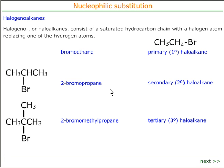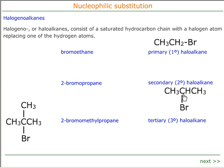A secondary haloalkane has two alkyl groups attached to the carbon holding the halogen. So 2-bromopropane is a secondary halogeno alkane. Notice that the '2' in 2-bromopropane does not indicate secondary — it tells you where the bromine atom is. Secondary refers to the fact that the carbon has two alkyl groups attached to it.